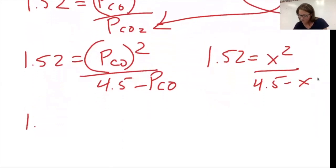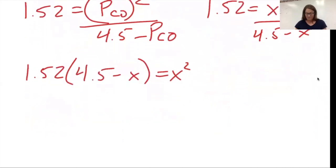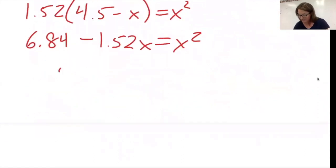Cross multiplying 1.52 times the quantity 4.5 minus X equals X squared. I'm going to distribute. 1.52 times 4.5 gives me 6.84 minus 1.52X equals X squared. Getting everything all on one side. Zero will equal X squared plus 1.52X minus 6.84.